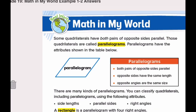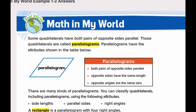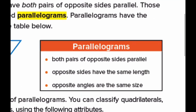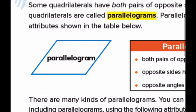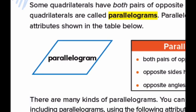Parallelograms have the attributes shown in the table: both opposite sides are parallel — that's why they're called parallelograms; opposite sides have the same length; and opposite angles are the same size. So there are three attributes about a parallelogram: both pairs of opposite sides are parallel, opposite sides have the same length, and opposite angles have the same size.